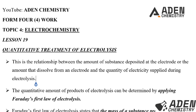This is the relationship between the amount of substance deposited at the electrode, or the amount that dissolves from the electrode, and the quantity of electricity supplied during the electrolytic process. The quantitative amount of products of electrolysis can be determined by applying Faraday's First Law of electrolysis.